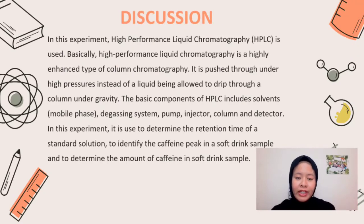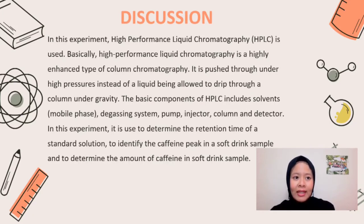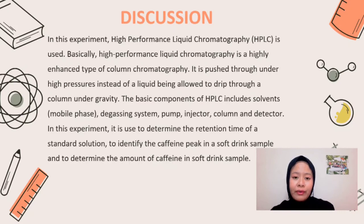My name is Syedinra Natasha, and I will continue with the discussion. In this experiment, high performance liquid chromatography (HPLC) is used. Basically, HPLC is a highly enhanced type of column chromatography — it is pushed through under high pressure instead of allowing a liquid to drip through a column under gravity. The basic components of HPLC include solvent (mobile phase), degassing system, pump, injector, column, and detector. In this experiment, it is used to determine the retention time of a caffeine standard solution, to identify the caffeine peak in a soft drink sample, and to determine the amount of caffeine in the soft drink sample using the response factor method.